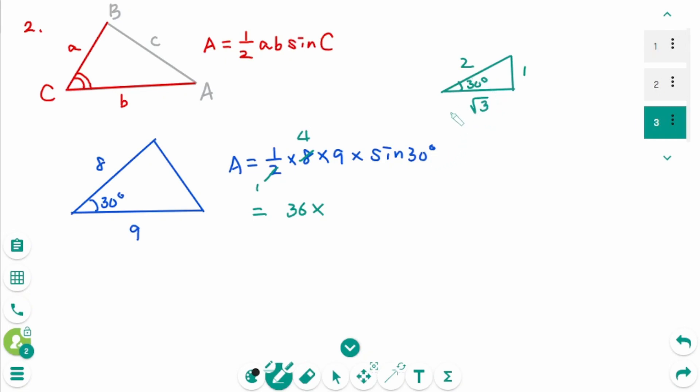The sine ratio is opposite side over the hypotenuse, which is 1 over 2. Then 2 times 2, then 2 times 1, 2 times 18, the final answer is 18.